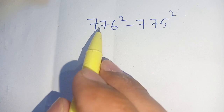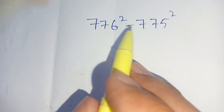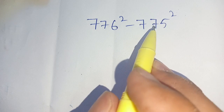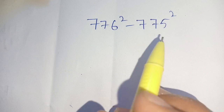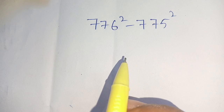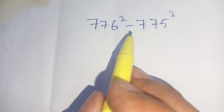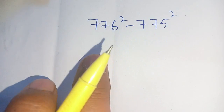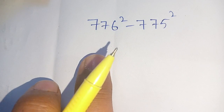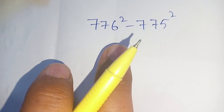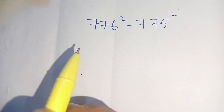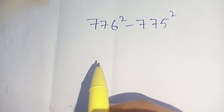Hello everyone. How to solve 776 square minus 775 square without using any calculator. If the calculator is allowed, then it is no problem. But we have to solve it without using any calculator.